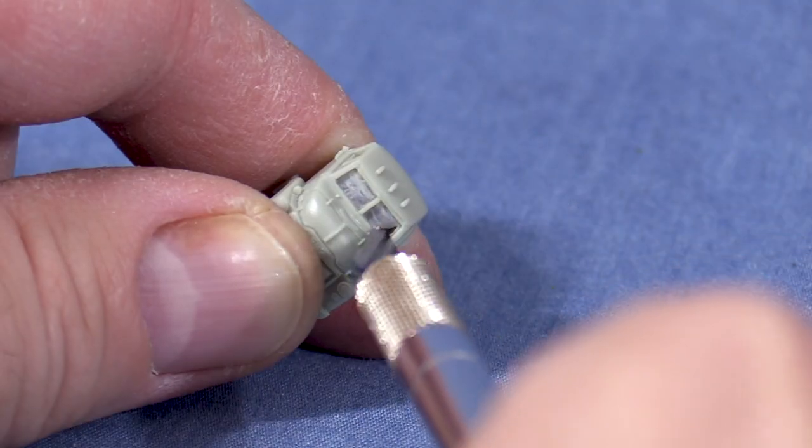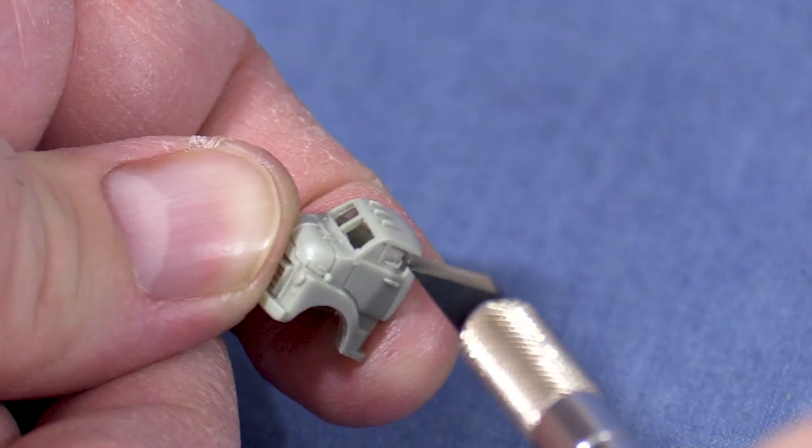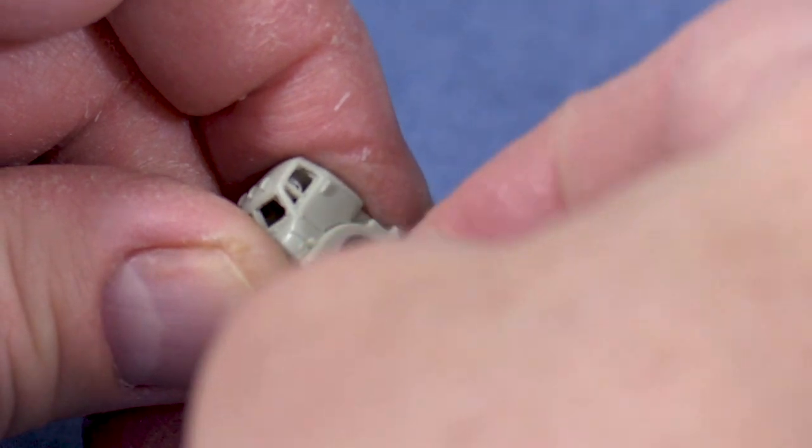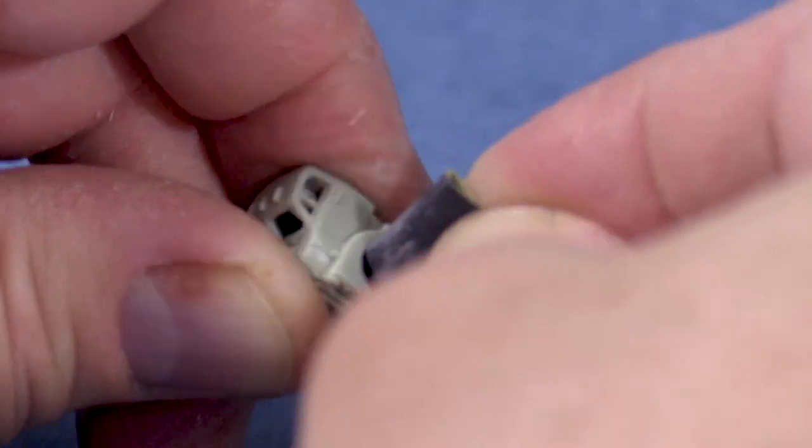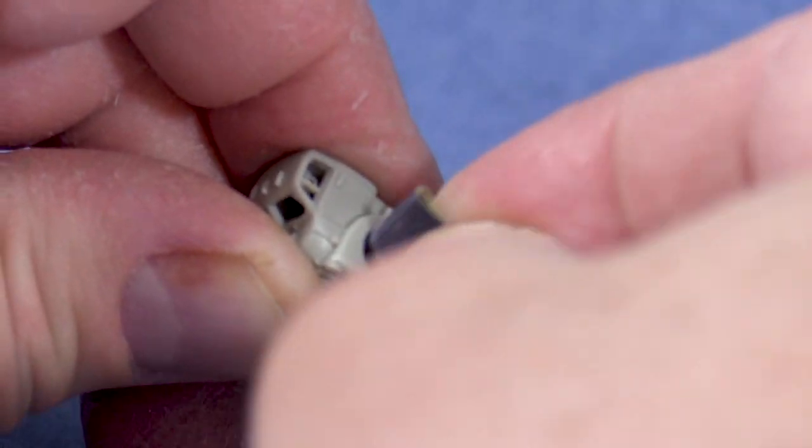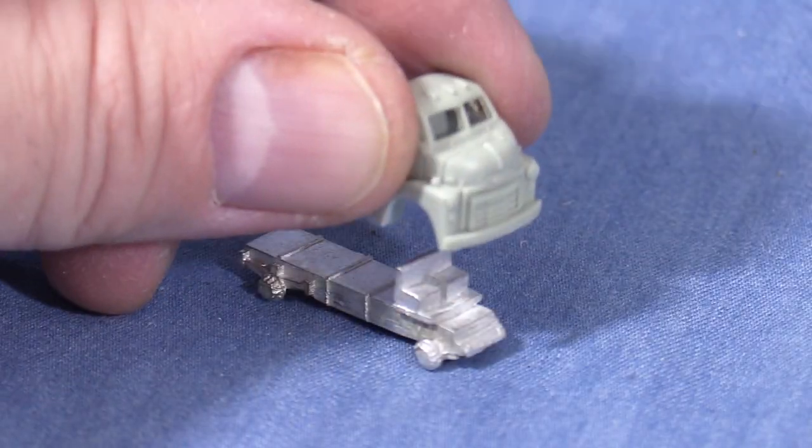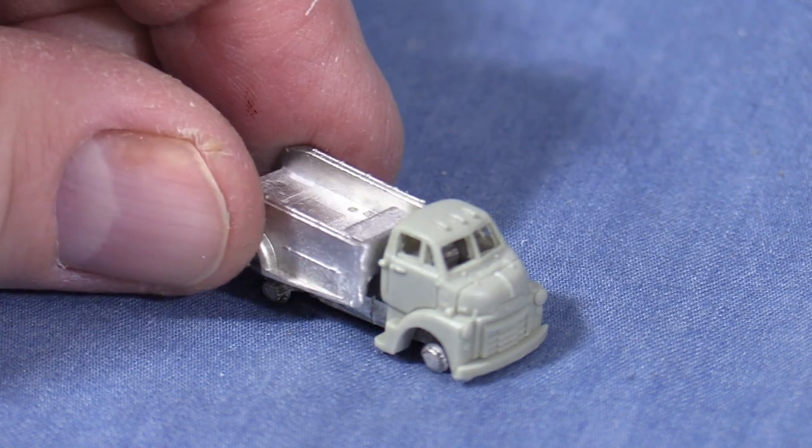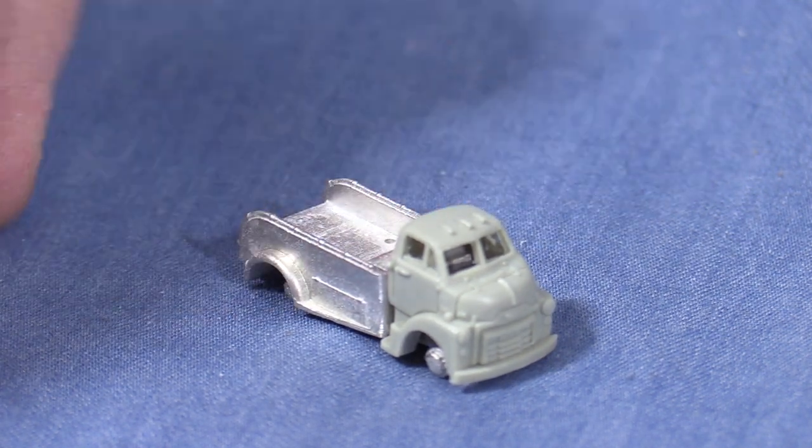A new sharp blade in a hobby knife is good for cleaning the flash inside the cab windows. My kit has just a tiny bit of flash inside the wheel wells. A small piece of 400 grit sandpaper will take care of it. Before continuing I like to test fit the major parts. This looks good so far.